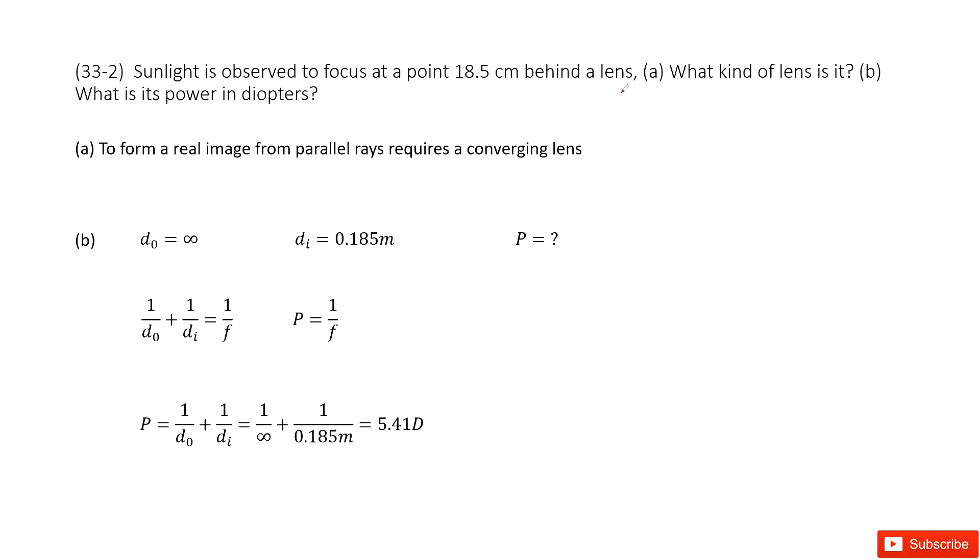Now you can see we have the lens but we don't know if it's converging or diverging, right? But the quantity given is: sunlight is observed—keyword observed—to focus at a point 18.5 centimeters behind a lens.